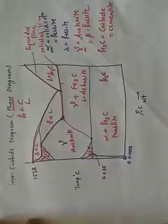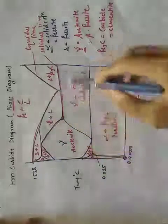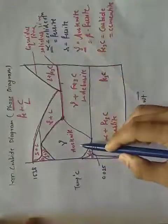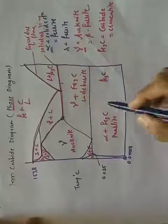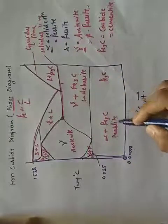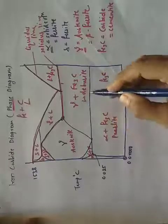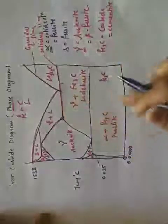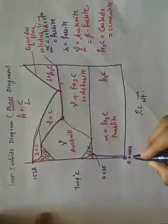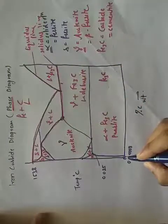Hello friends. In the last session we discussed the different phases in the iron-carbon diagram: alpha, delta, austenite, compound Fe3C, and combinations — alpha plus Fe3C called pearlite, gamma plus Fe3C called ledeburite. Now we'll understand the different temperatures and compositions in this diagram.